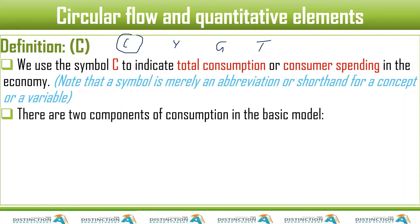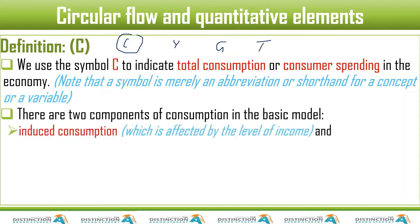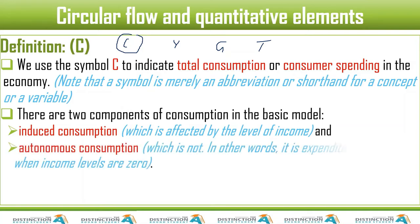There are two components of consumption in the basic model. Induced consumption is affected by the level of income. Autonomous consumption is not affected by the level of income — it can happen even when income levels are at zero. To understand the difference, consider a car and food. Buying a car is an example of induced consumption; when income levels are low, we don't really buy cars because we can do without them. But food is an example of autonomous consumption.